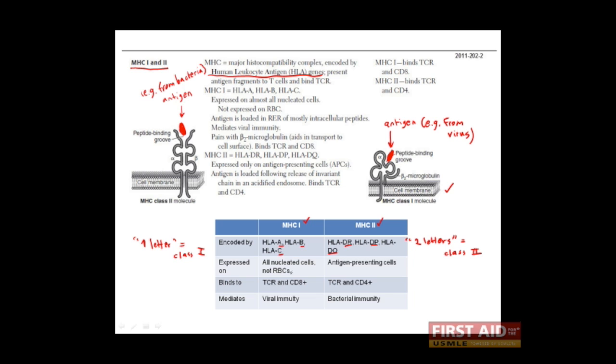MHC class 1 molecules are found on all nucleated cells of the body. Of course, they are not found on red blood cells because red blood cells do not have a nucleus. MHC class 2 molecules, on the other hand, are more restricted in the body. They are only found on antigen-presenting cells, which include macrophages, dendritic cells, and B cells.